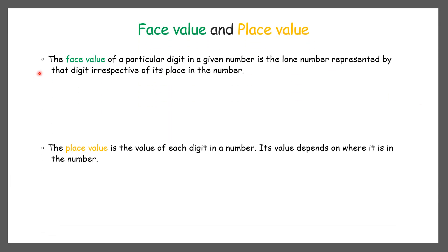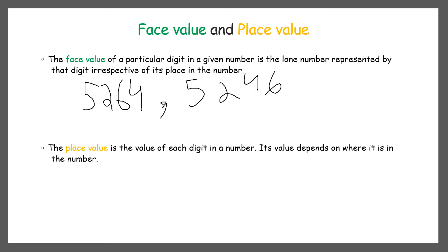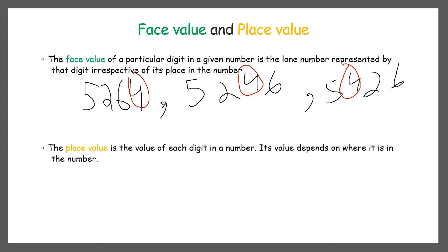Now, face value and place value. The face value of a particular digit in a given number is the value represented by the digit irrespective of its place in the number. It means face value is just the actual value of that digit. For example, in the numbers 5264, and 5246 — the face value of digit 4 in each number is simply 4, no matter whether it is at the hundreds place, tens place, or units place. We just write the actual value of that digit, which is 4.